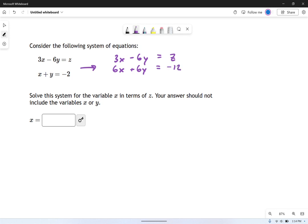And maybe you can see why I'm doing it this way. It's so that when I add them up like this, I get 9x, the y's cancel out. 9x equals z minus 12.